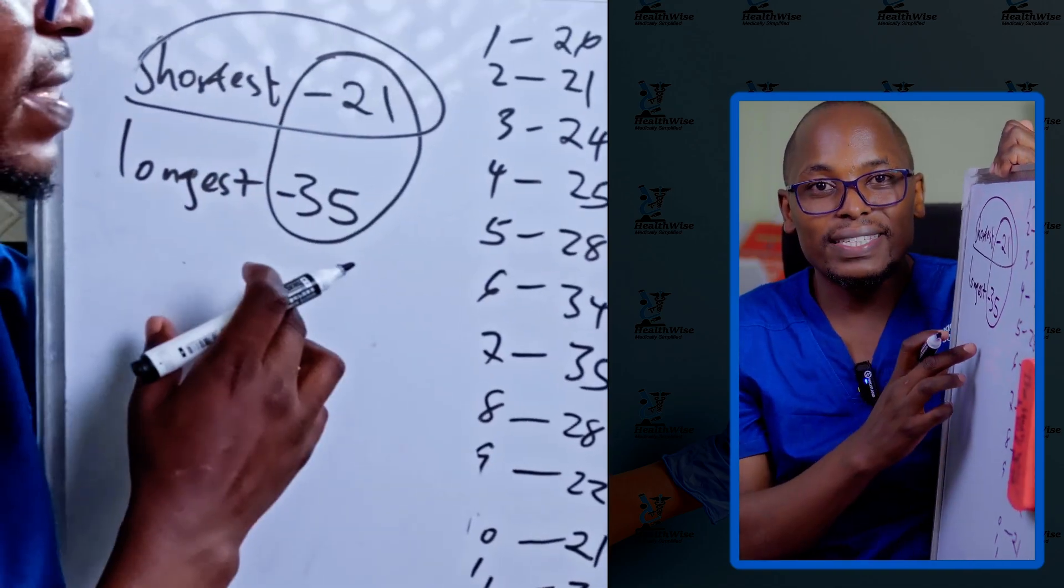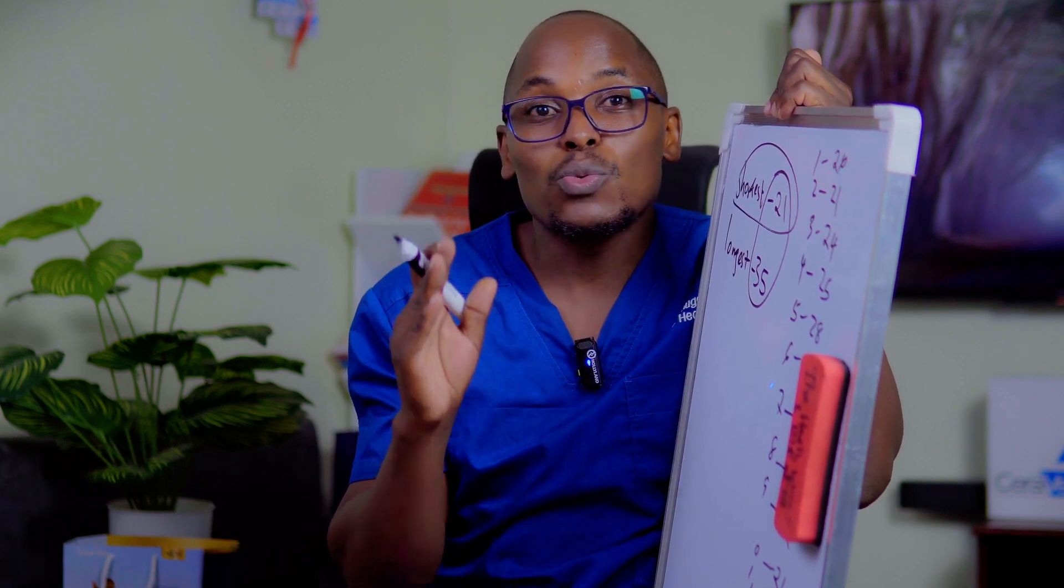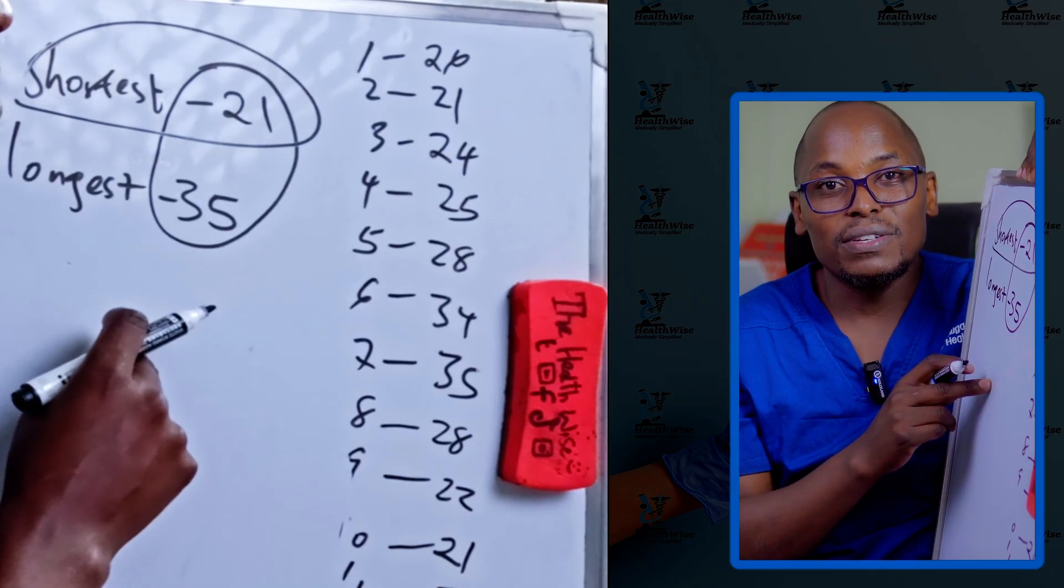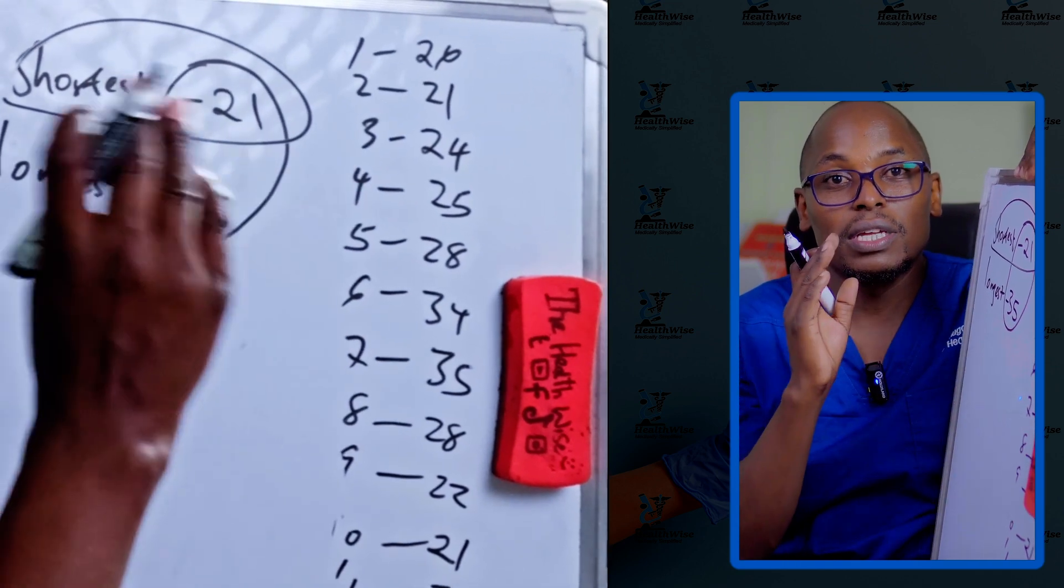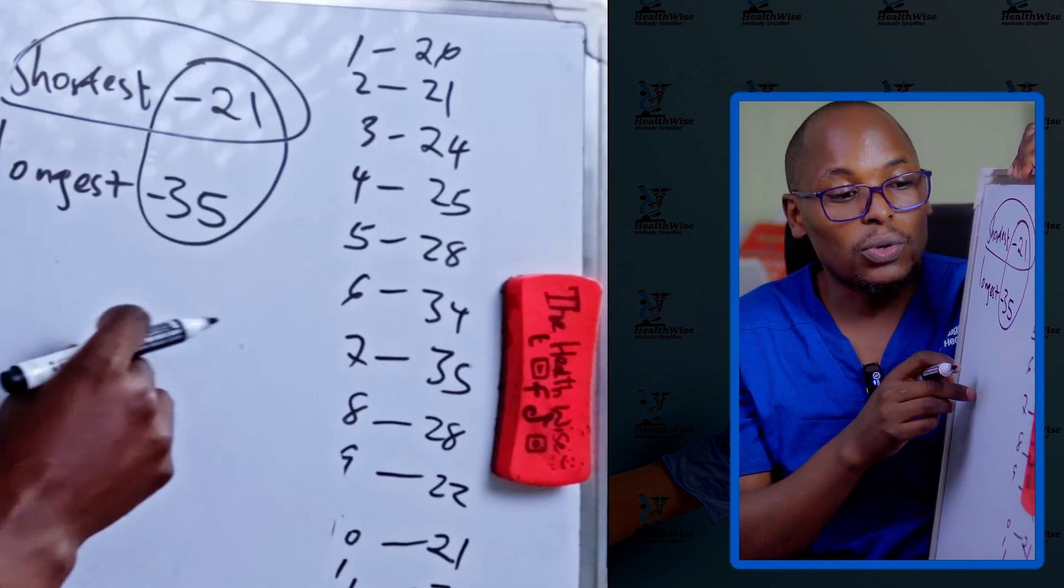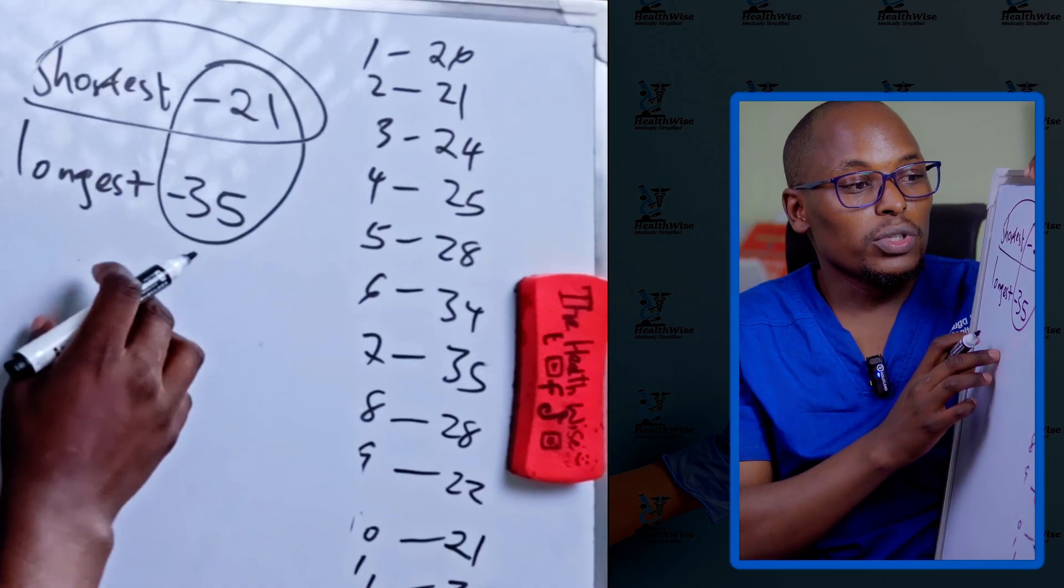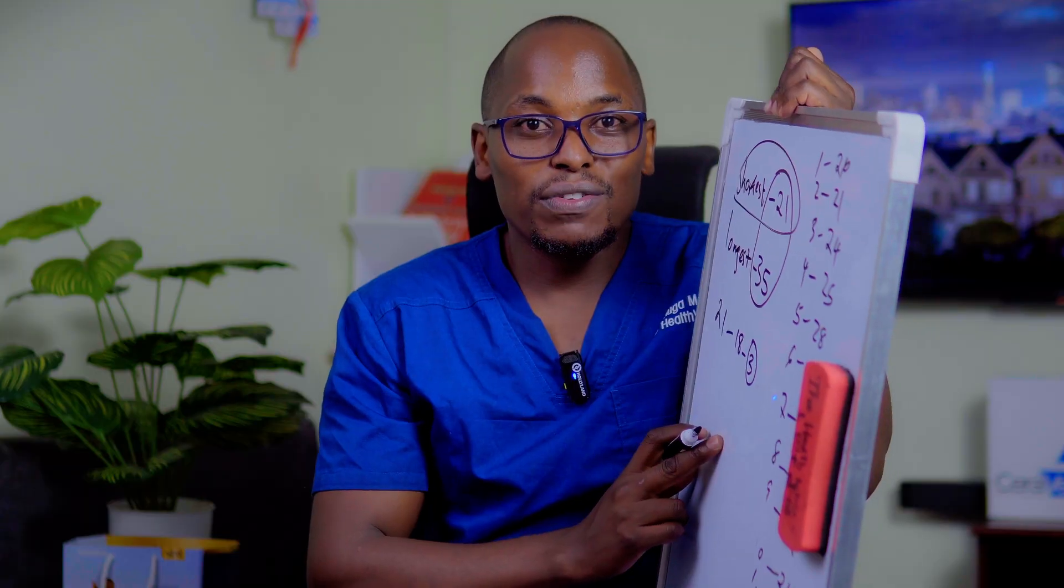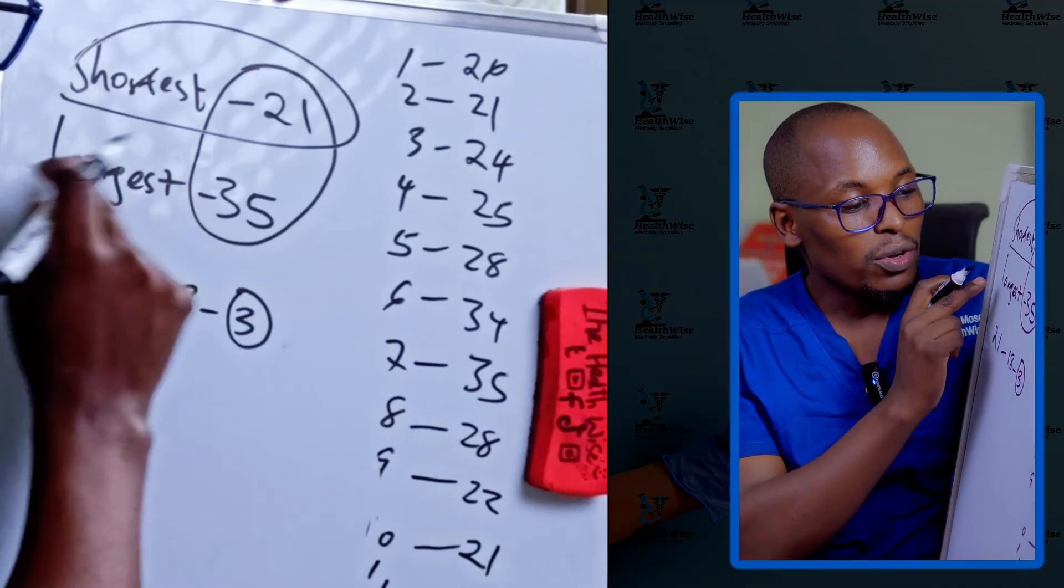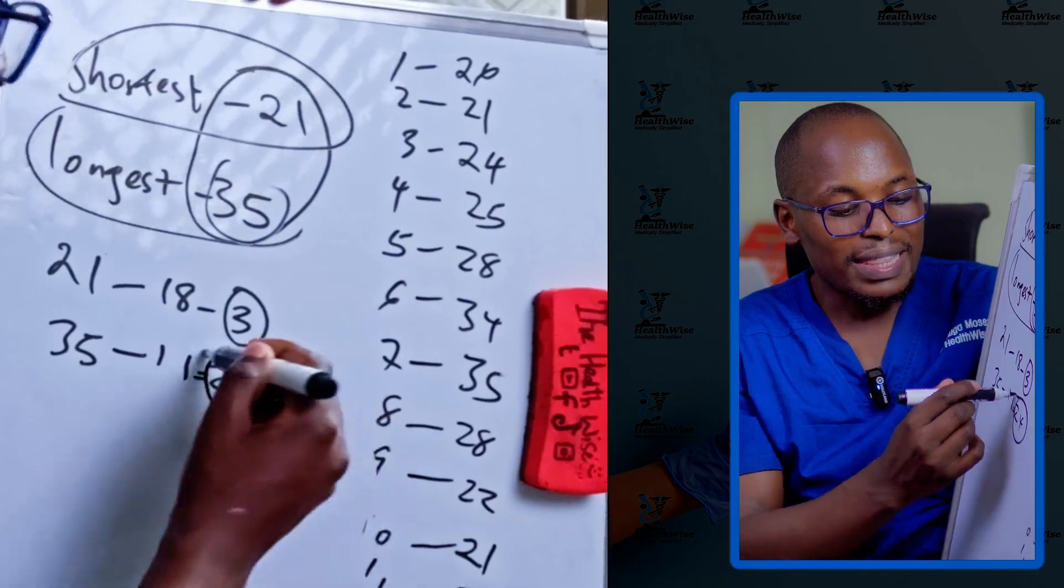Now that we have all the cycles here, we have the shortest and we have the longest. Now it's actually very simple. Now we are starting a new cycle today. We want to know when you're going to be safe or when we are not going to be safe so that we capitalize on the unsafe days so that we become pregnant faster or we avoid those if we are using this as a family planning method. And remember, this is not the most effective way of family planning. Now what you need to do is, now you pick the shortest which is 21, you minus 18 which will give you 3 and this is the first day of the fertility period. Now when you go to the longest here which is 35, you minus 11, you're going to get 24 and this should give you the last day of fertility.